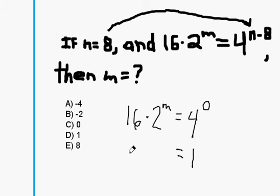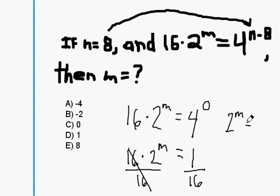So we rewrite 16 times 2 to the m equals 1. Now, we cannot multiply 16 times 2 because of this m here. If we remember our PEMDAS rules, exponents come before anything else. So what we should do is get rid of this 16 by dividing on both sides. So now we have 2 to the m power equals 1 over 16.